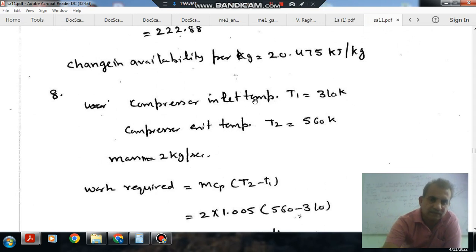So, compressor inlet temperature T1 is 310 K. And compressor exit temperature T2 is 560 K. Mass is 2 kg per second.